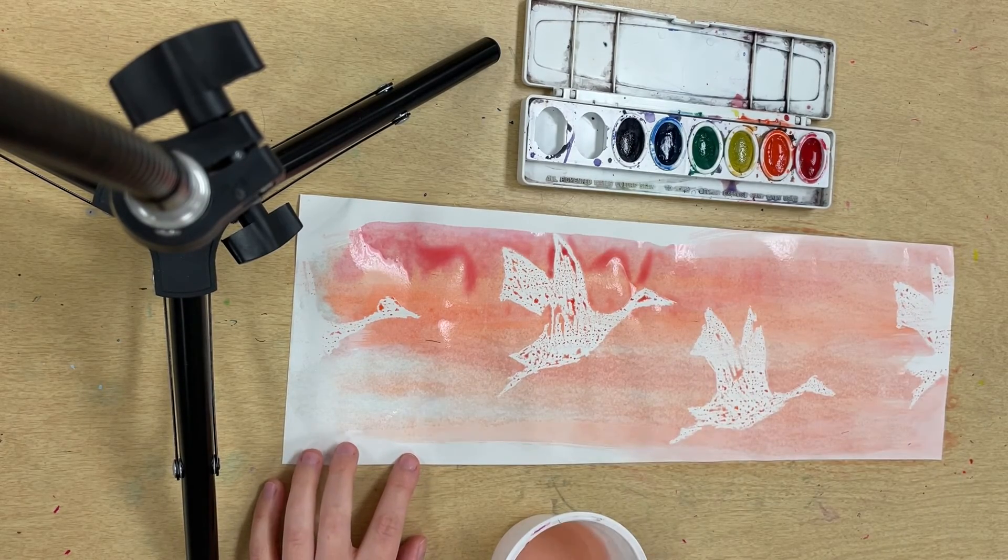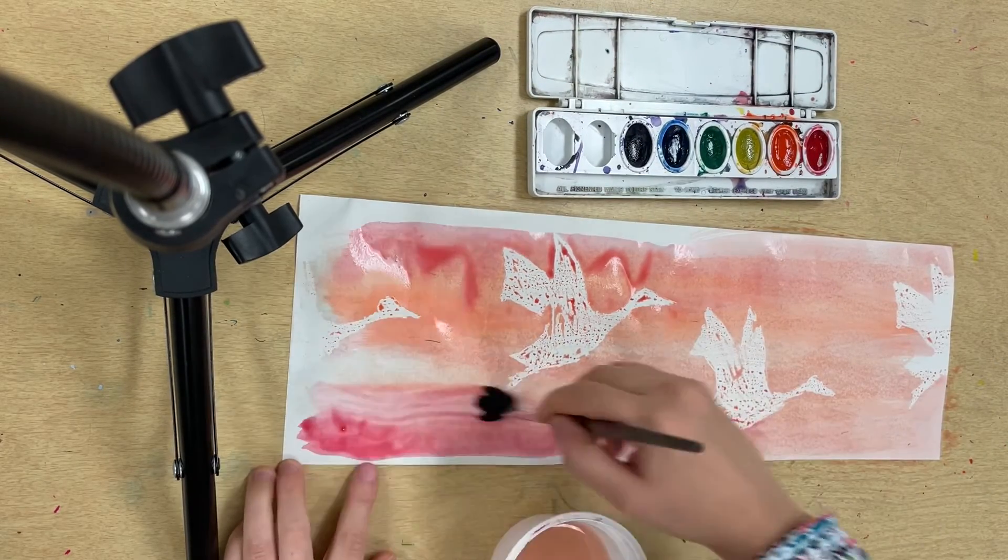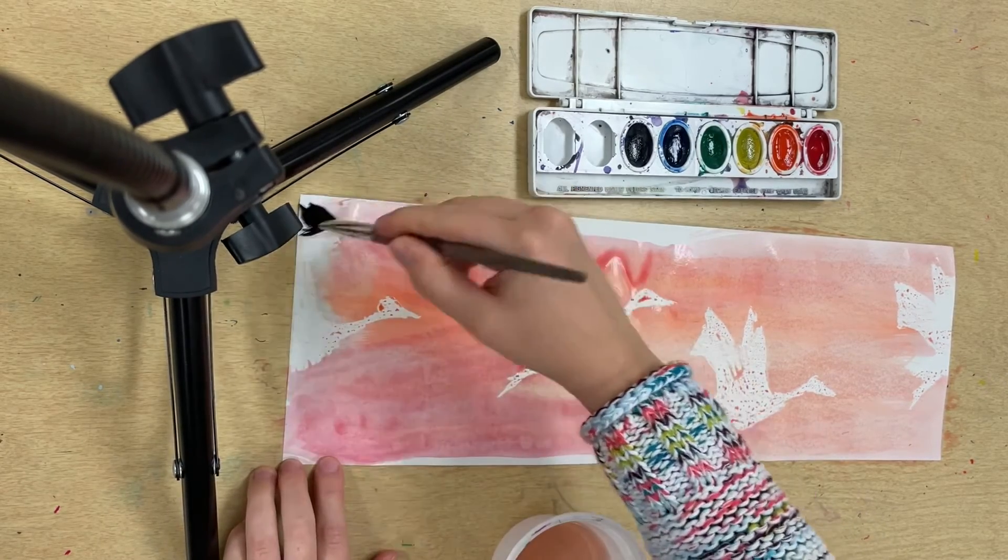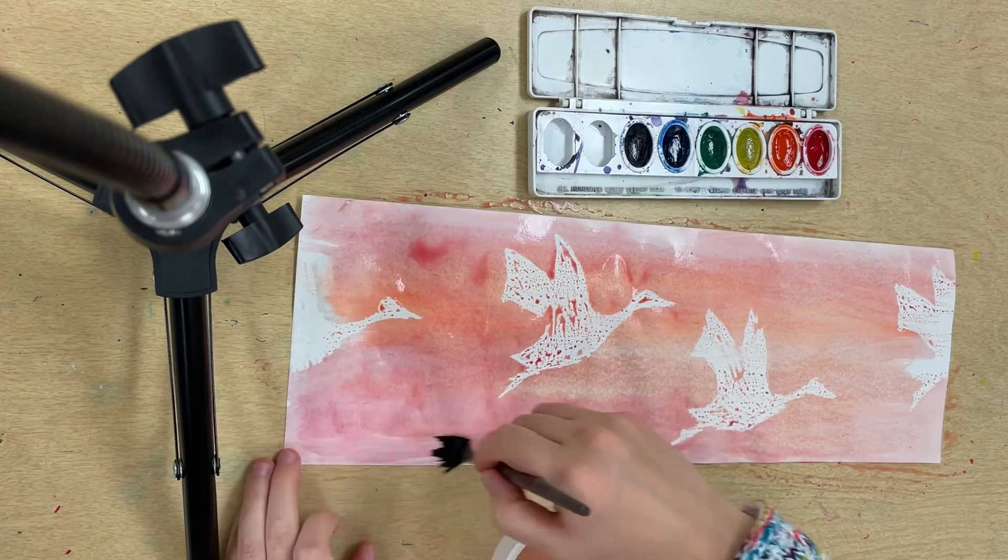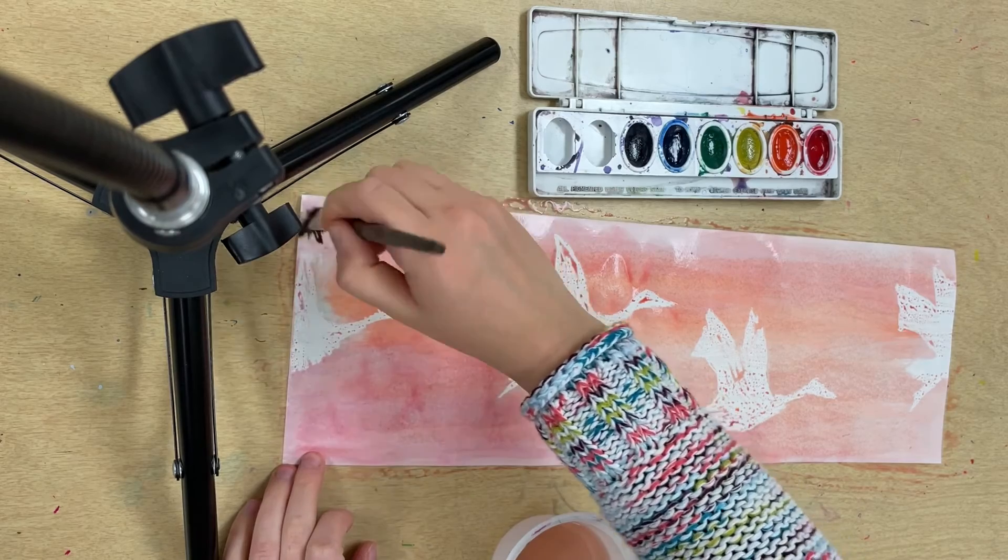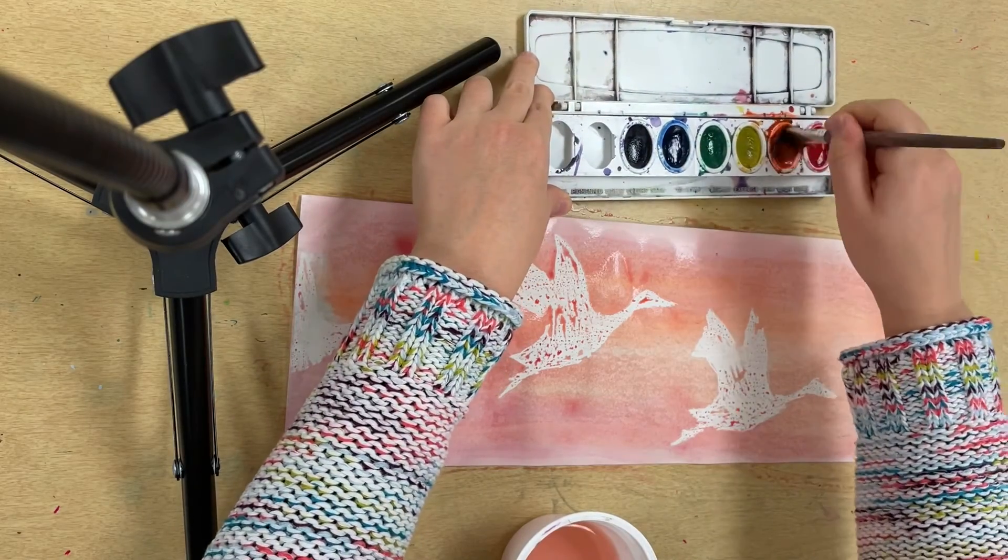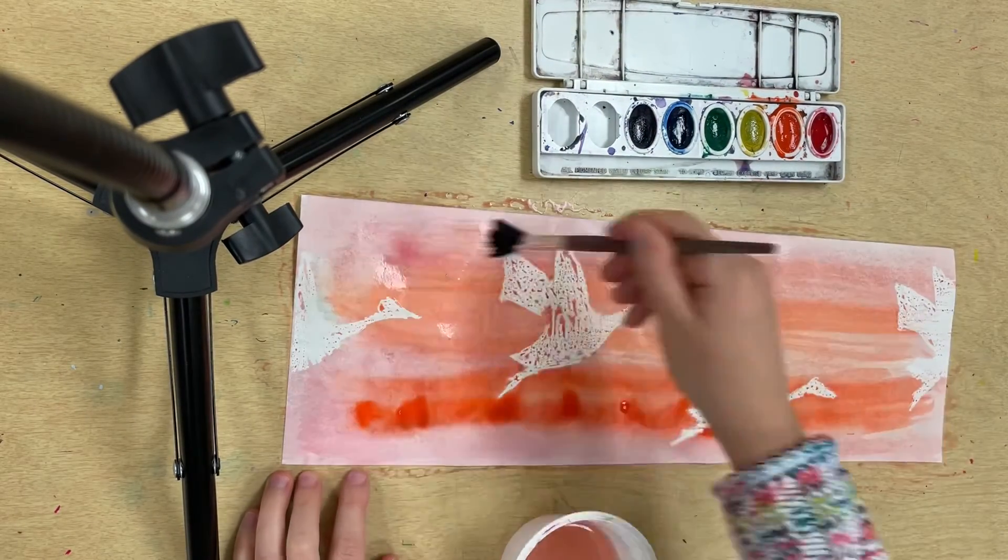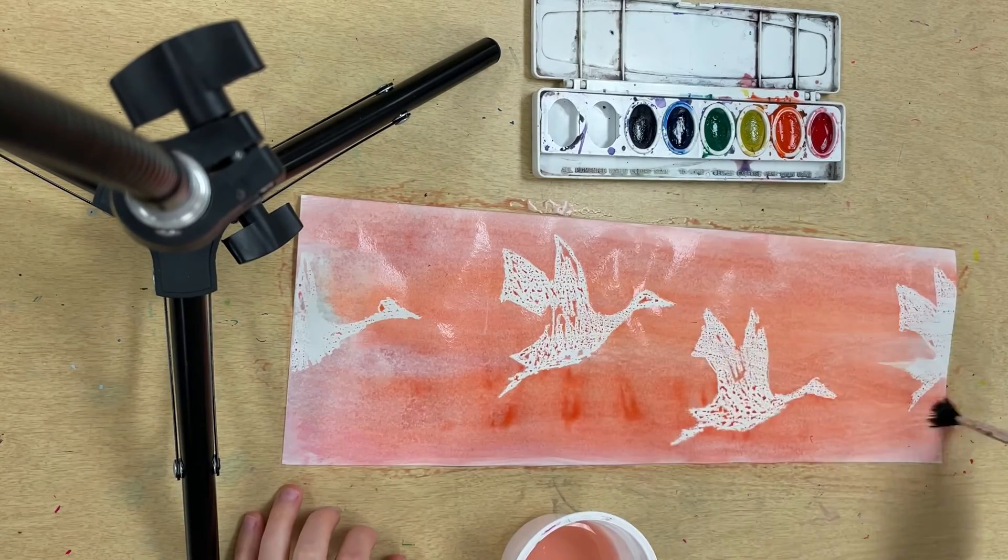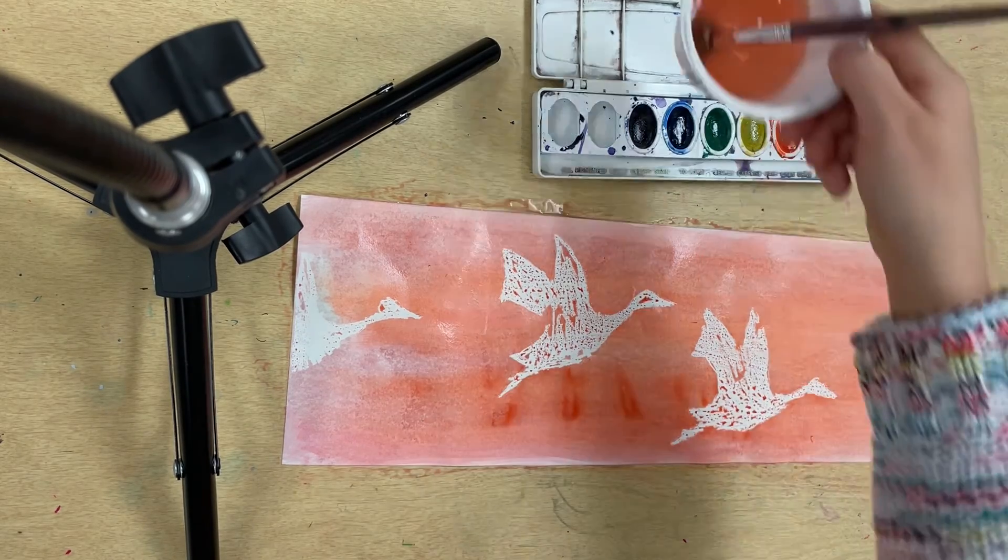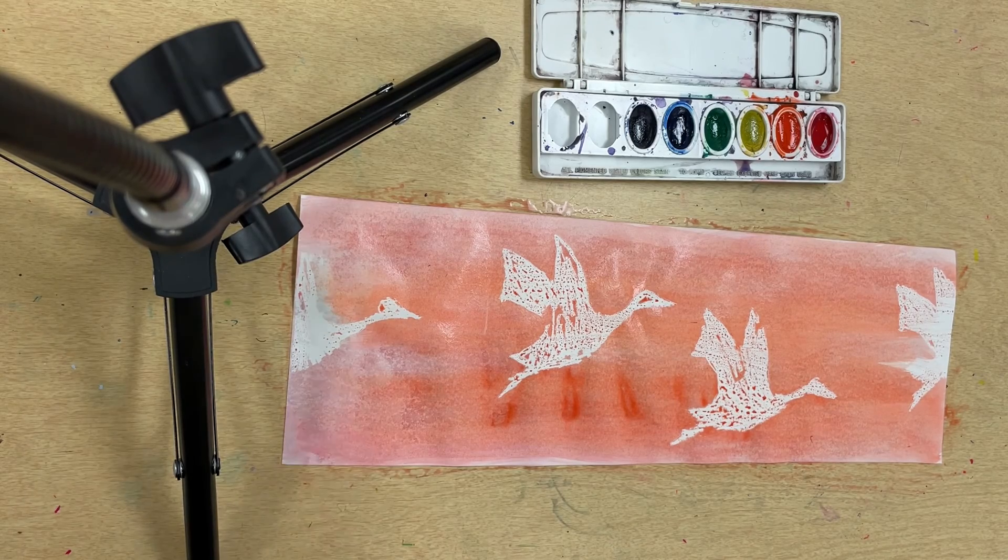The reason we're using analogous colors is because analogous colors mix together well. They look really good when you put them right on top of each other. If we were to use colors that weren't analogous, they might end up making a dull, muddy, brownish color. That's not quite what we want in this painting. We want some bright colors. I've painted my entire paper and now it's going to go into the drying rack.